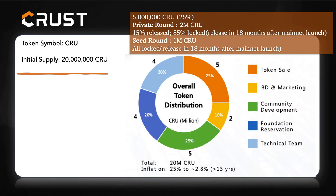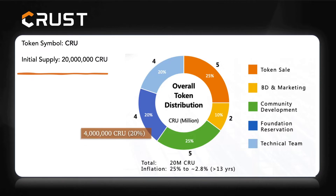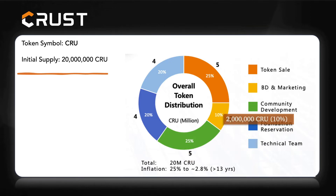Tokens sold in the C round are fully locked and will be linearly unlocked in 18 months after the mainnet. Tokens reserved for the team and the foundation are fully locked and will be linearly unlocked in 24 months after the mainnet. Community development tokens are used for centralized and decentralized exchange liquidity, testnet rewards, storage activity rewards, and so on. BD and marketing tokens are used for marketing purposes such as airdrops and other marketing activities.